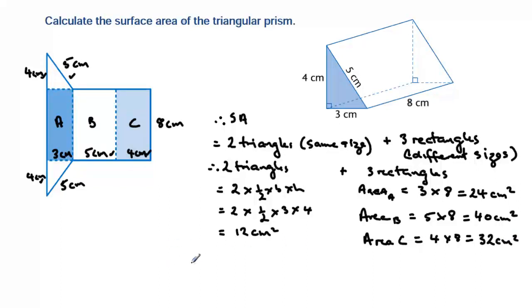So therefore we can say, therefore the surface area must be equal to 12, and then we just add in all of our other areas, 24 plus 40 plus 32, which gives us a total of 108 centimeters squared.